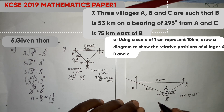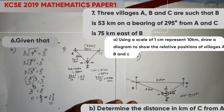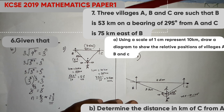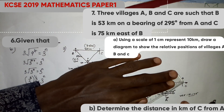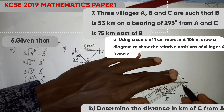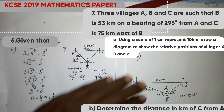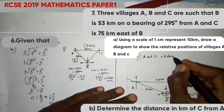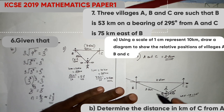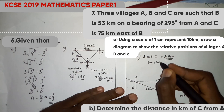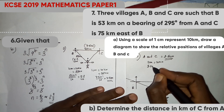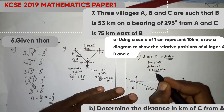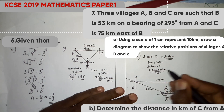Question 7B: determine the distance in km of C from A. Let us measure the distance from A to C on the diagram. We get 3.5 cm. Since the scale is 1 cm equals 10 km, we calculate 3.5 cm times 10 km, which gives 35 km. Therefore the distance from A to C is 35 km.